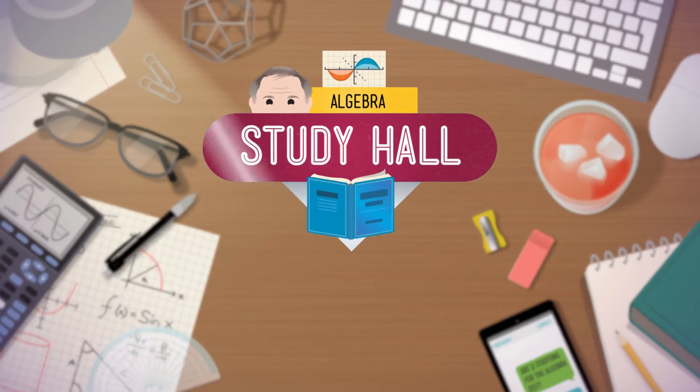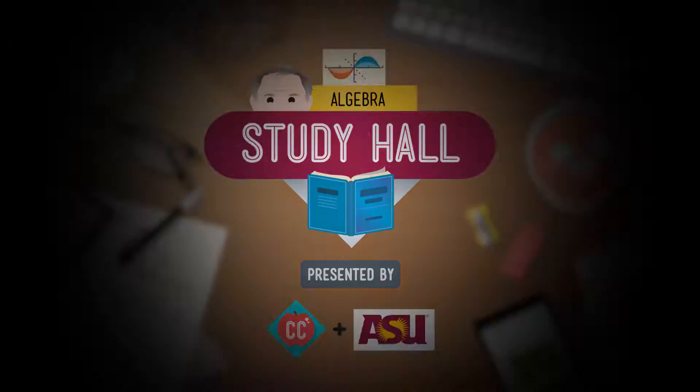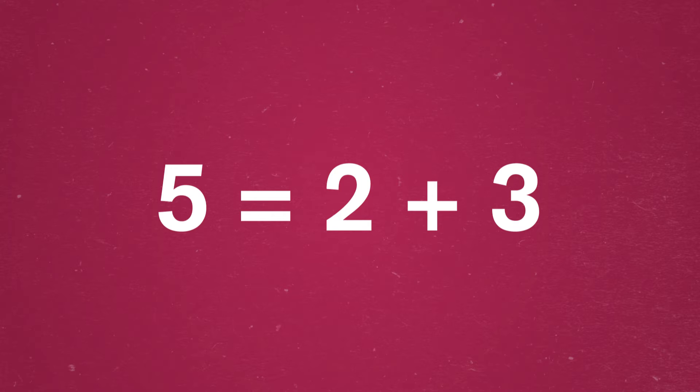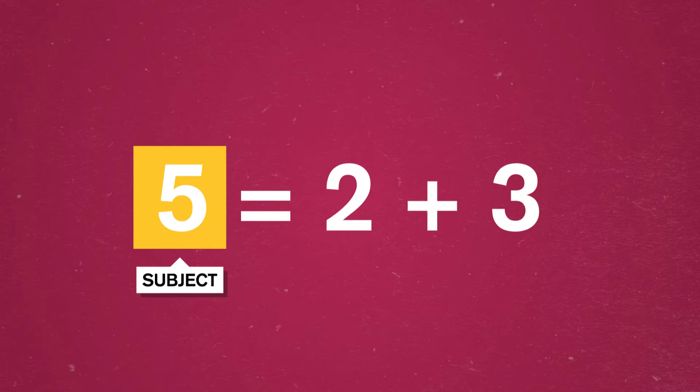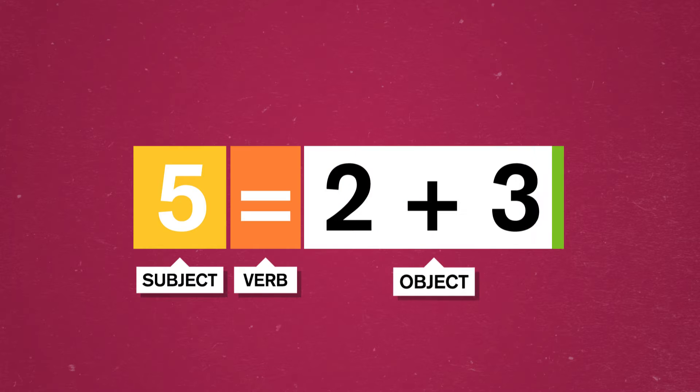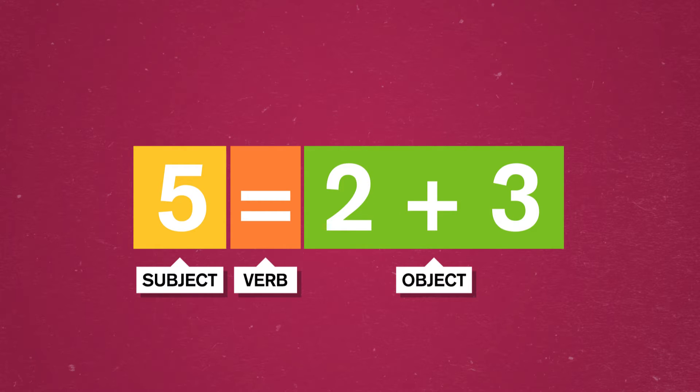G'day, I'm James Tanton, and this is Study Hall Algebra presented by Arizona State University and Crash Course. What you see here is really a sentence. It has a subject, the quantity 5, it has a verb, equals, and it has an object, the quantity 2 plus 3. 5 equals 2 plus 3. Stick a period on the end and bam, that's a complete English sentence.